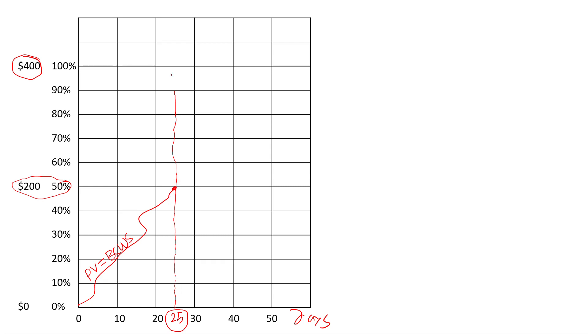Now, we are at day 25. This is today, day 25. We're looking at what's going on with the project. For some reason, things didn't go that well. We are right here, just finished 30% of the work, which is 30% of $400 is $120 worth of work. This is called the earned value.